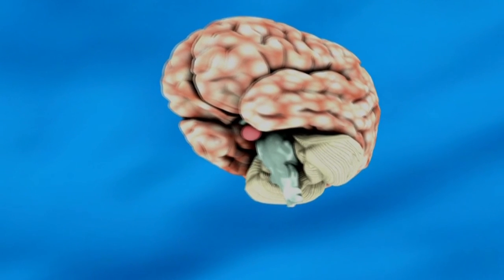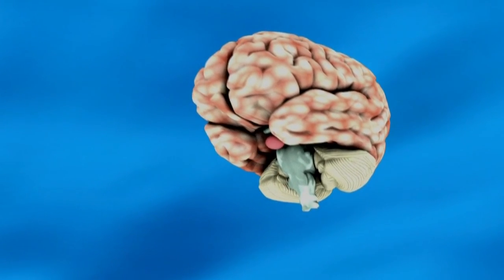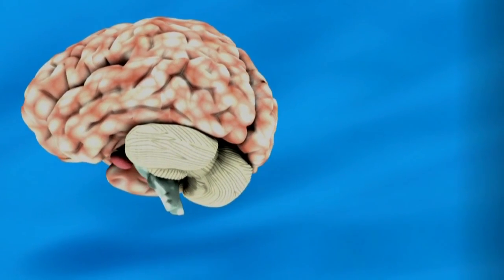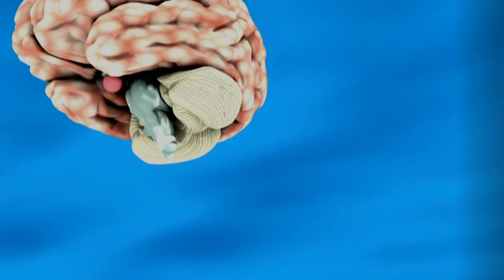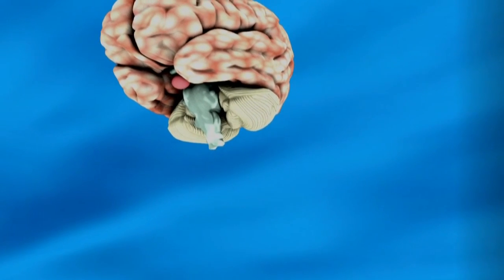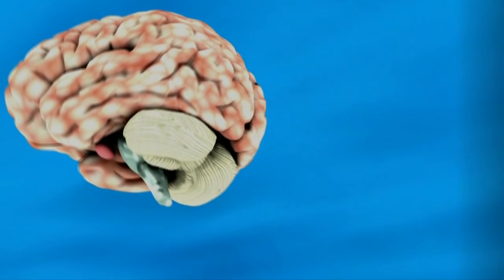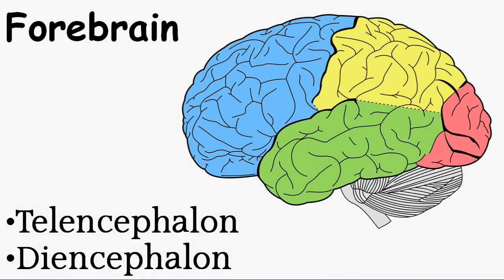The forebrain is the most evolutionarily advanced part, controlling our thinking, decision making, memory, reasoning, and social behavior. The hindbrain controls all the vital functions in our body like breathing, heartbeat, digestion, and some reflex actions — making it the most primitive part of our brain. The forebrain is further split into two sections: the telencephalon and the diencephalon.